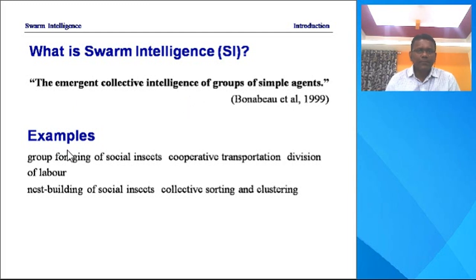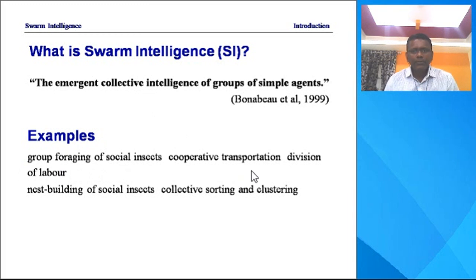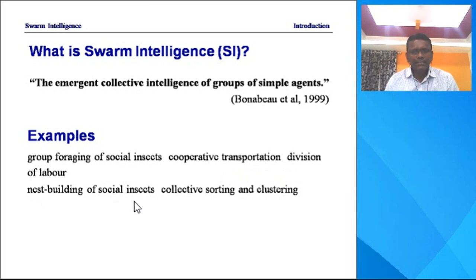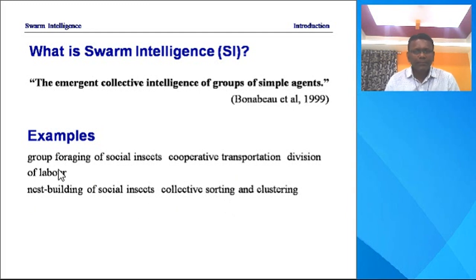He gives examples like grouping and foraging of social insects, cooperative transportation, division of labor, nest building of social insects, and collective sorting and clustering. Very important examples are grouping, foraging, and nest building of social insects. In nature, we observe various insects like ants, birds, and fish — how they live and work in a group. That is called group foraging of social insects.